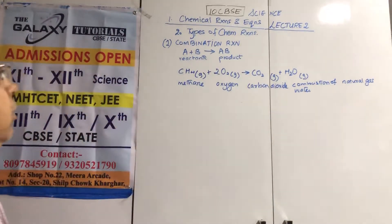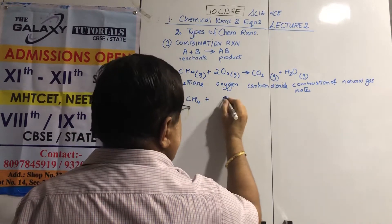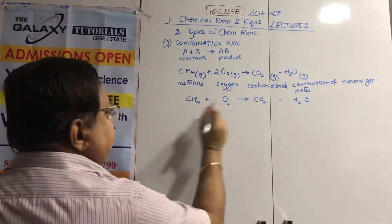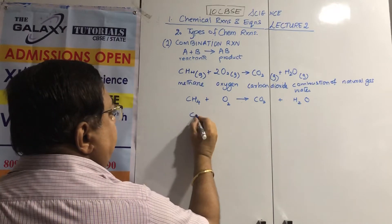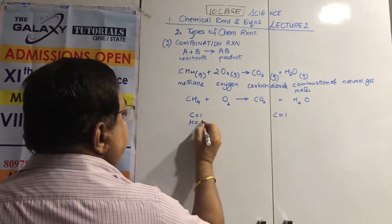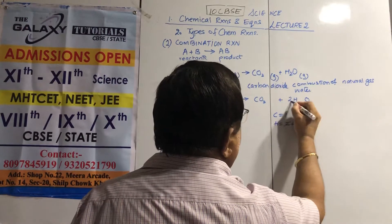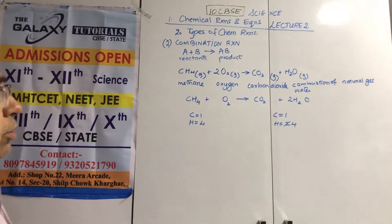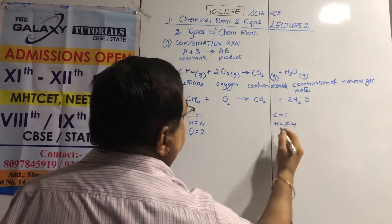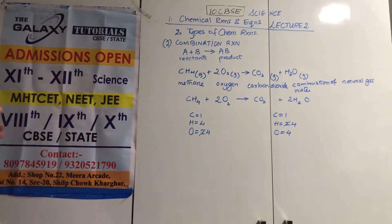Now, how to balance: methane is CH4, oxygen is O2, carbon dioxide is CO2, water is H2O. Left-hand side vs right-hand side — carbon is 1 on both sides. Hydrogen is 4 on the left, 2 on the right, so I put a 2 before H2O. Oxygen is then 2 on the left, 2+2=4 on the right. Equation is balanced.